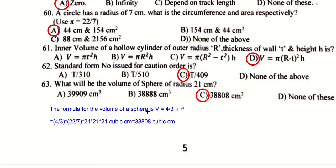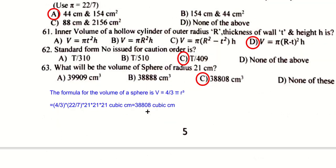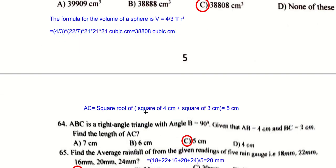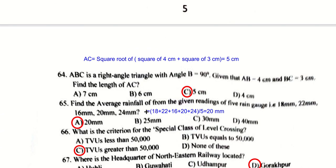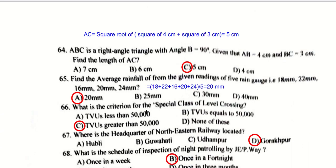A standard form number is to be used in cosine order for T-409. The volume of a sphere of radius 21 cm is calculated using the formula (4/3)πr³, and after calculation the answer is 38,808 cubic centimeters.